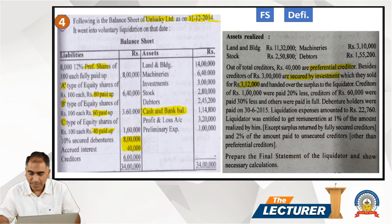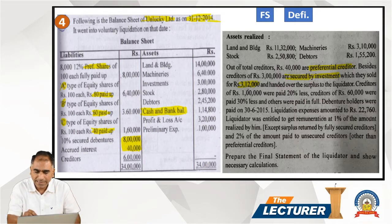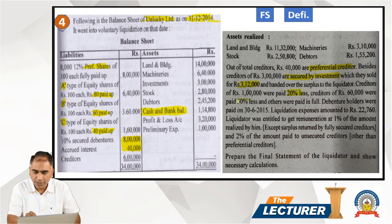Creditors of ₹1 lakh were paid 20% less, so they will be paid ₹80,000. Creditors of ₹60,000 were paid 30% less, so they will be paid ₹42,000. The remaining creditors were paid in full. We will calculate the total balance amount payable to unsecured creditors.